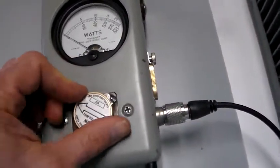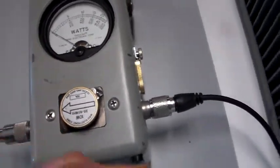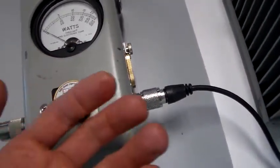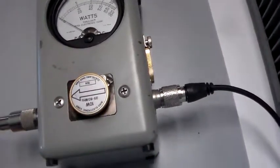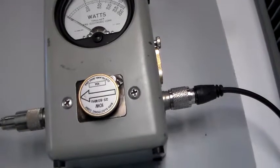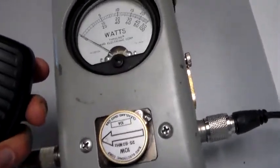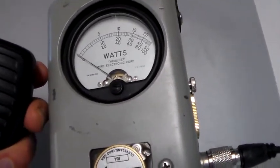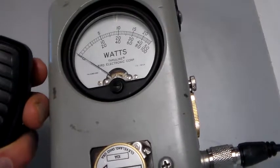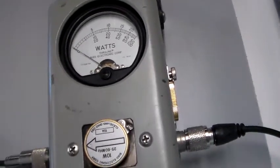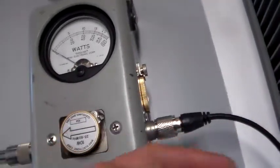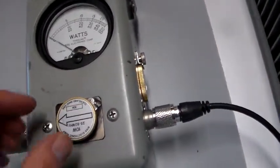If you turn this around, it measures the reflected power. That's the amount of power being reflected back from the antenna or load, and that would be due to a mismatch of impedances. If we key the microphone here, you can see there's negligible movement of the power meter, which is good. We would expect to see negligible, ideally zero power being reflected back from our load.